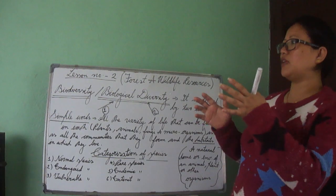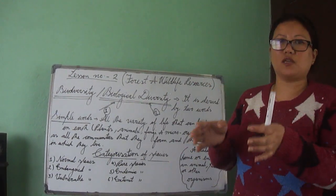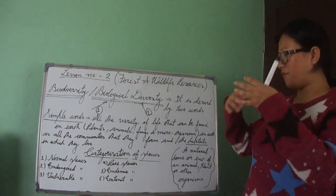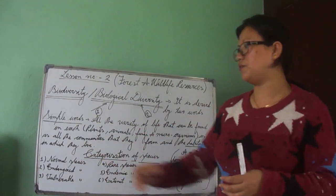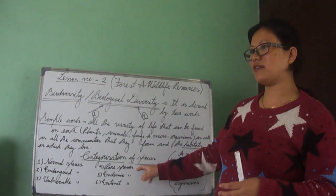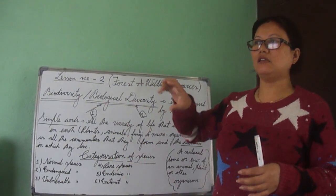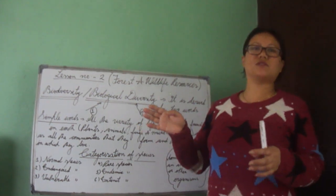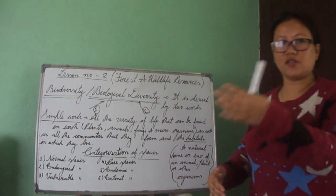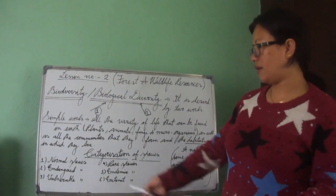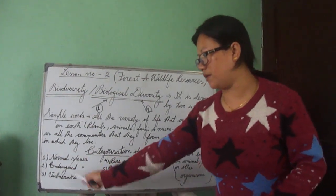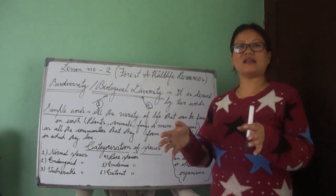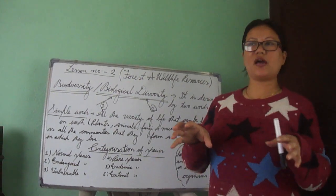Next we have Rare Species. Their population is already very less. Due to illegal hunting and many other illegal factors, their numbers are reducing. If this continues the same way, they will join the list of vulnerable species.